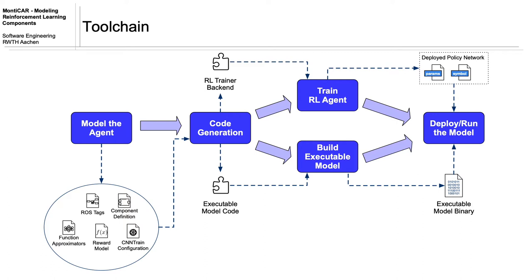Before we can use the executable model, we train the agent and its policy by executing the generated trainer backend. After the training, the trainer backend outputs the optimized weights for the policy function approximator, as well as an architecture description file. After the building of the executable model, we get the executable model binaries.